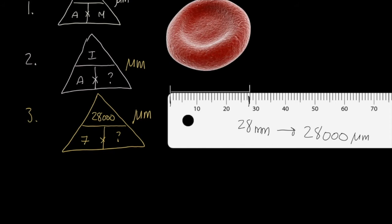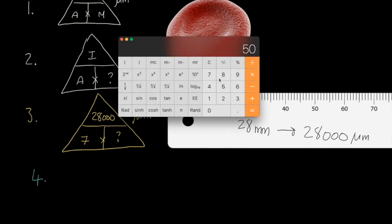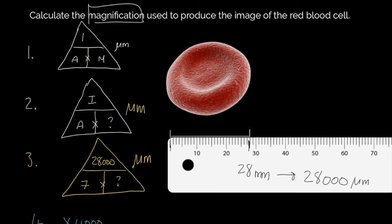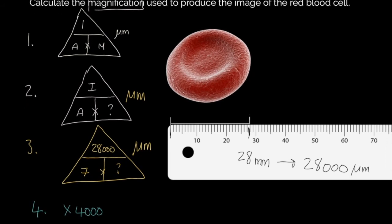So to complete that, number four, let's actually calculate, what have we got here? 28,000 divided by 7, gives us a magnification factor of times 4,000. We have magnified this red blood cell 4,000 times to make it the scale that it is within this question.